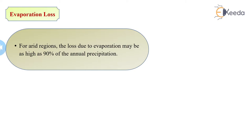For arid region, we already discussed in chapter 3 what is arid and what is semi-arid. Arid region in which irrigation water is not required. For arid region, the loss due to evaporation may be as high as 90% of annual precipitation.